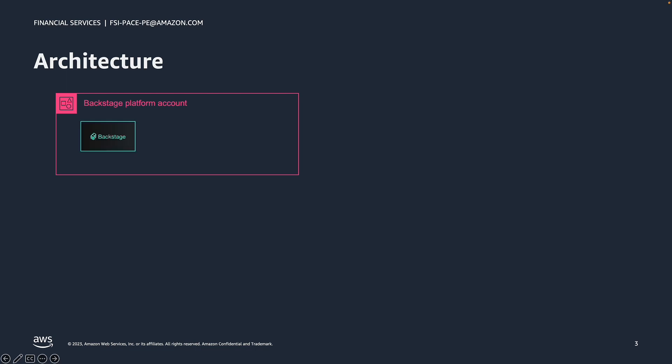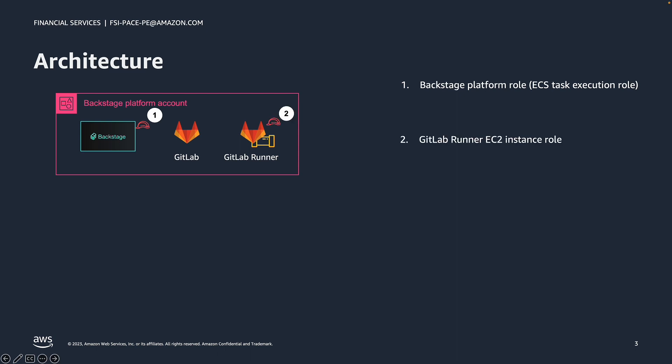We'll begin with a look at the account where Backstage and OPA on AWS have been deployed. We'll refer to this as the Backstage platform account. In this account, the Backstage application and its plugins run as a service in an Elastic Container Service cluster. A GitLab source code management instance runs as an EC2 instance, and another EC2 instance provides an environment for GitLab runners to execute GitLab CI/CD pipelines.